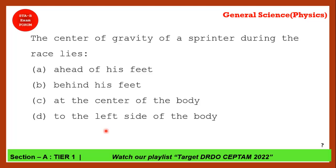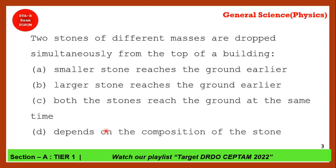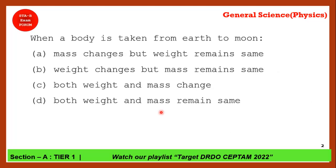The center of gravity of a sprinter during the race lies in — this is a somewhat tricky question, and we will skip it. Two stones of different masses dropped simultaneously from the top of a building: as we just discussed, both stones will reach at the same time because acceleration due to gravity is independent of the mass of the object. Option 3 is correct.